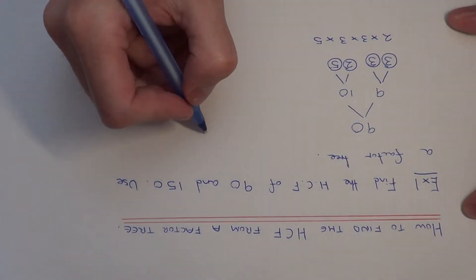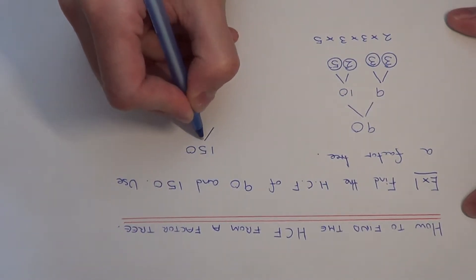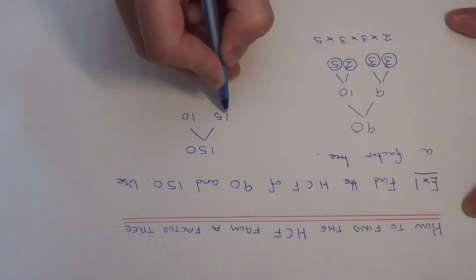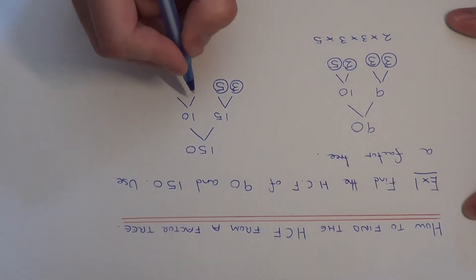Let's repeat this for 150. We can write this as 15 times 10. None of these are prime numbers so we can split these up. 15 is the same as 3 times 5. 3 is prime, 5 is prime, so let's circle those.